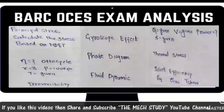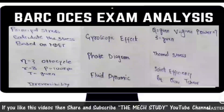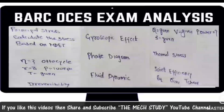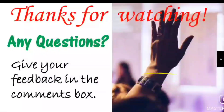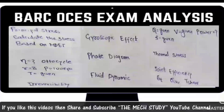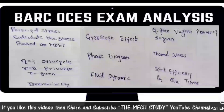Around 10 to 12 questions come directly from Strength of Materials, and around 10 questions come from Fluid Mechanics. The next question comes from joint efficiency in Machine Design. Two questions come from Industrial Engineering — one on waiting time calculation, and one related to an LPP graph.